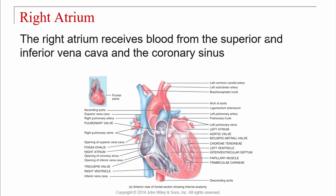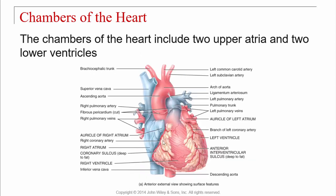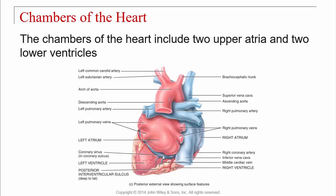The right atrium receives blood from the superior and inferior vena cava and also the coronary sinus. The coronary arteries are the first branches off the aorta and feed the heart muscle. All the cardiac veins dump into the coronary sinus, and the coronary sinus dumps into the right atrium. So three vessels drain into the right atrium: the superior vena cava, inferior vena cava, and the coronary sinus.